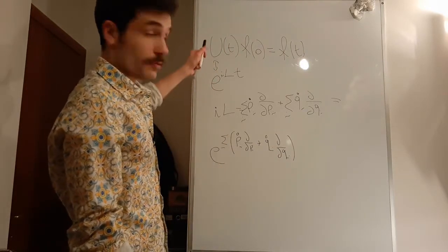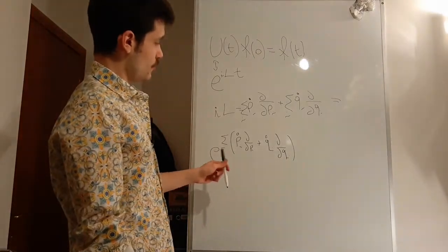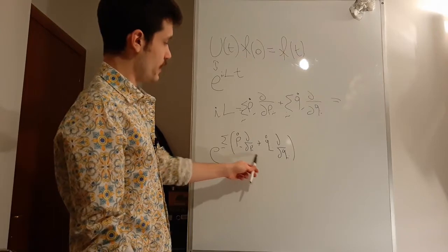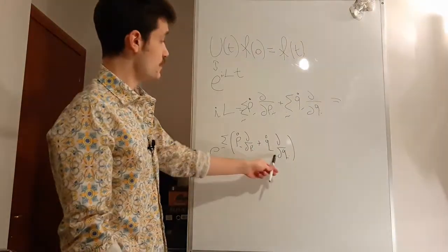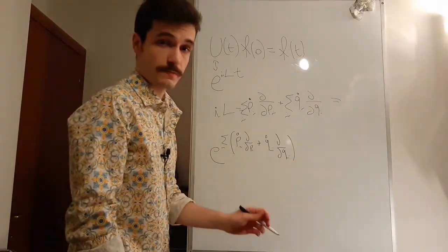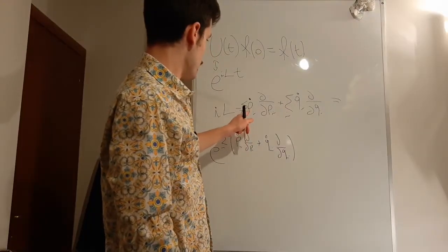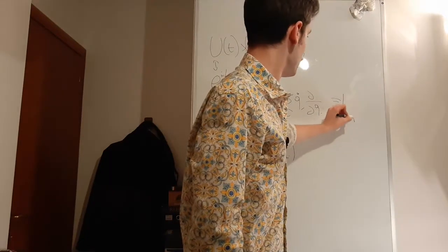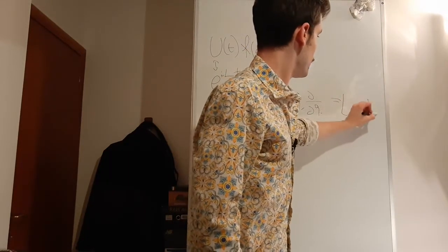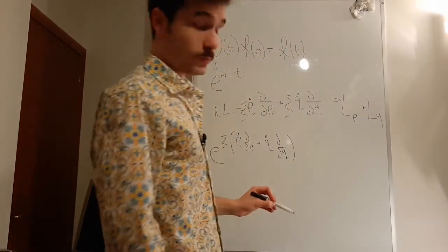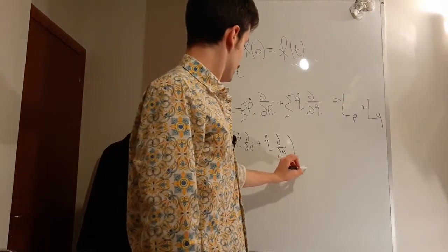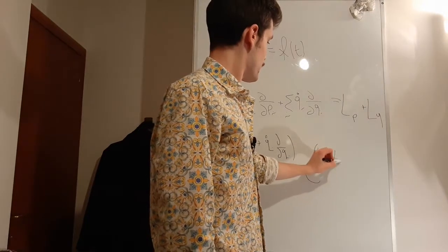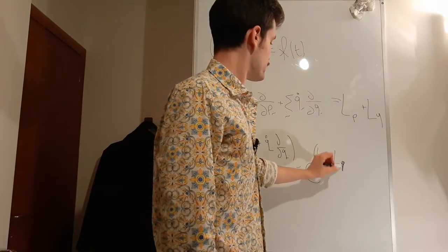And that's our propagator, as said. You will notice that this part will propagate the positions. We can split our Liouville operator in two different parts, one of the momenta plus one of the positions. Thus, we can write it as e to the L momenta plus L positions.